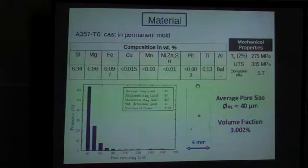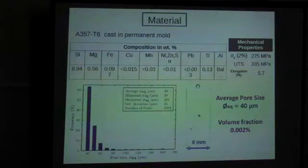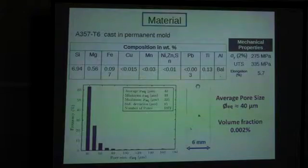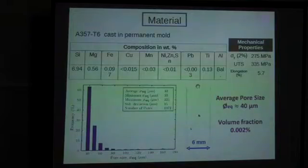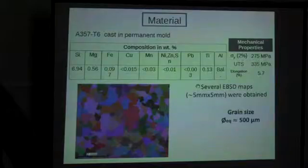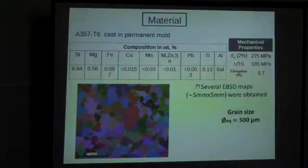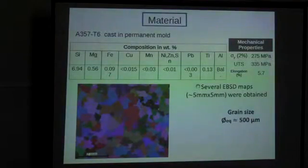The material is a cast aluminum alloy with 7% silicon, in T6 condition, cast in a permanent mold. This material has some porosity, as is typical of cast aluminum alloys, but surprisingly porosity plays no role in torsion — you can forget about the porosity in torsion. What does play a role are the grains, and the grain size is relatively large for this type of cast material, typically about half a millimeter.